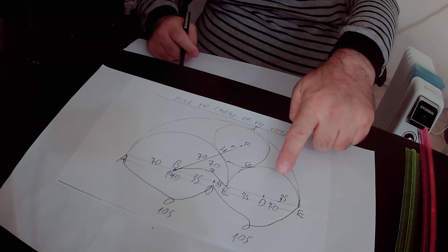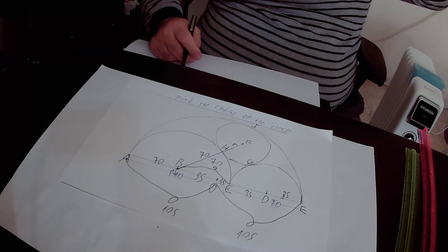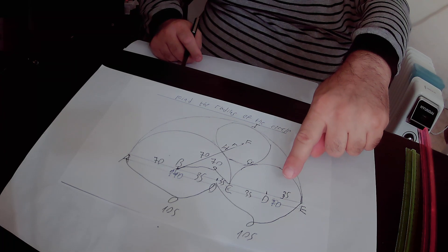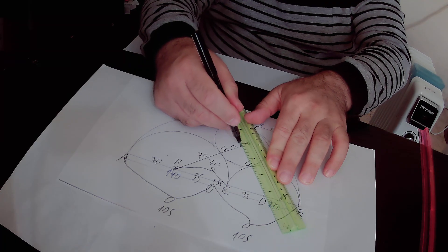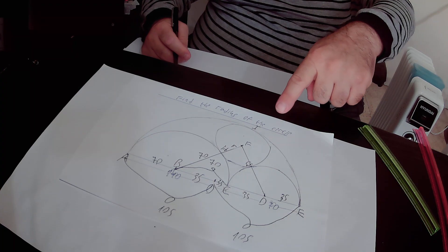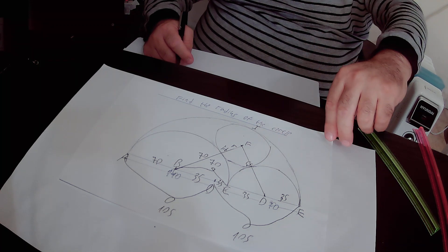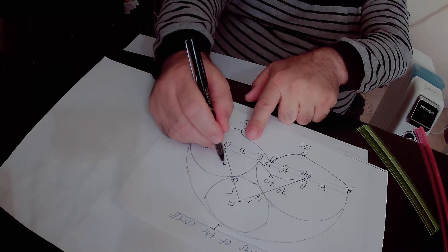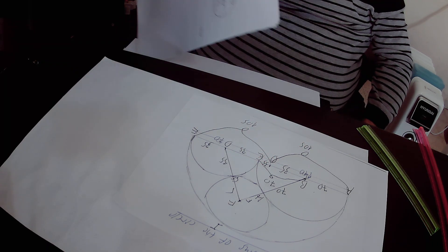This circle and this small semi-circle have an external tangency at point G. Therefore FD must pass through point G — FGD is one straight line. The radius of the small circle is small r, and the radius of the small semi-circle is 35 units. So FD equals 35 plus r units.